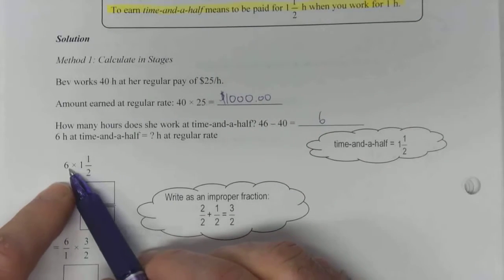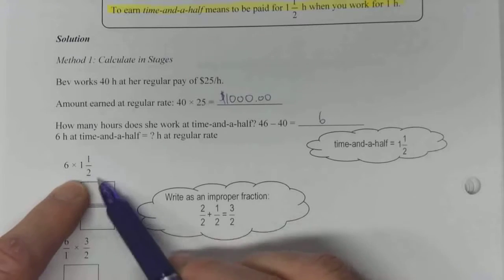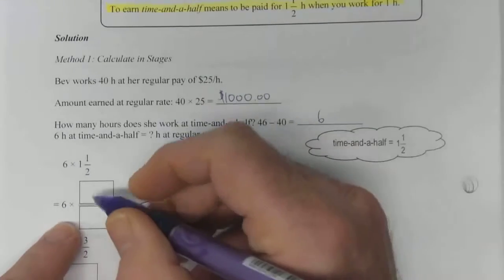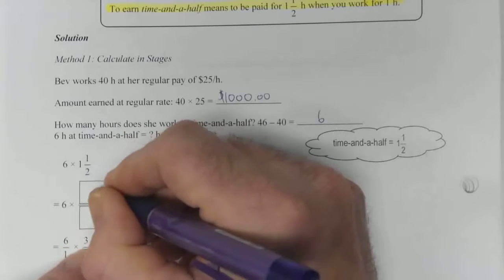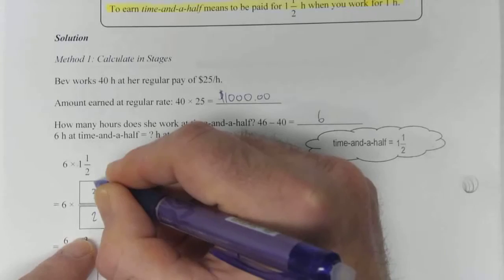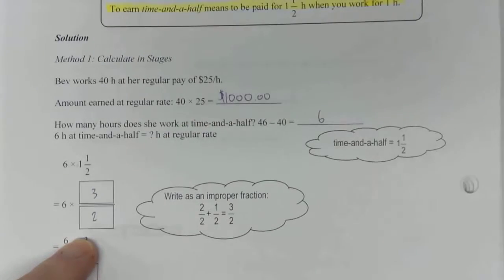So six hours at time and a half. She's going to get paid one and a half times that. So six times one and a half is the same as three halves. Two times one is two, plus one is three, so this becomes three halves.